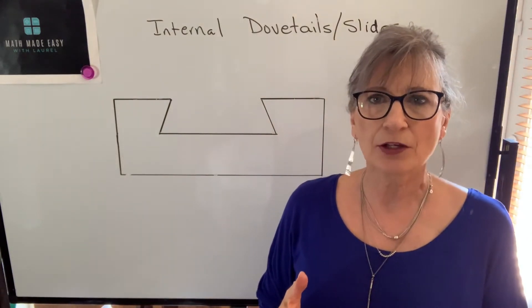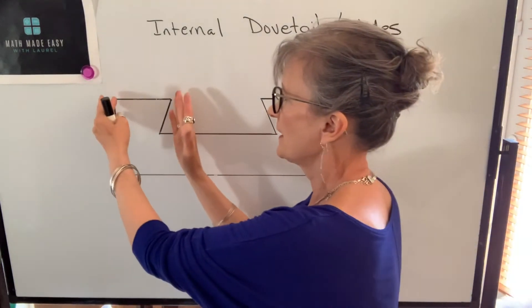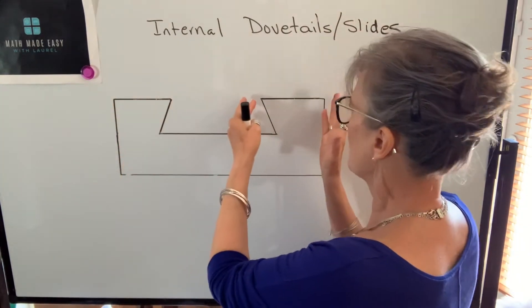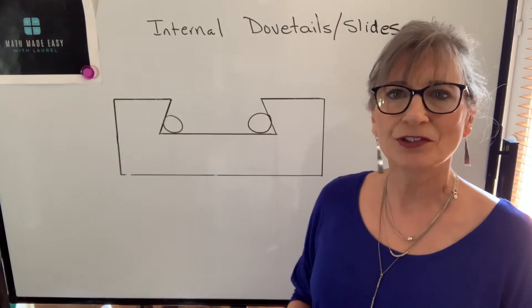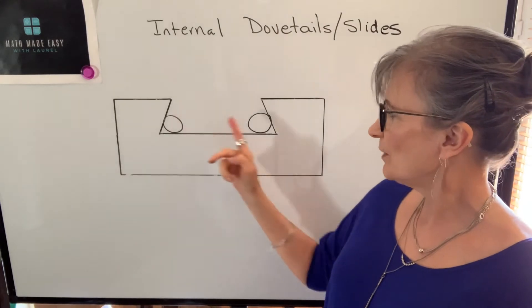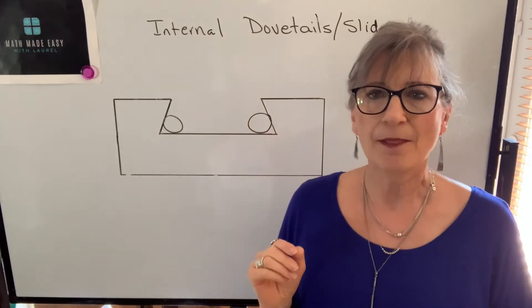You're not going to be able to accurately or precisely measure this distance, or this distance, or this distance. What you'll need to do is use measuring pins in these corners, and then you can measure from the crown of those pins,